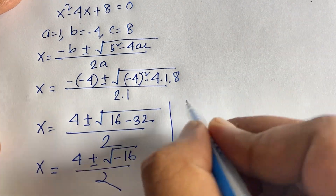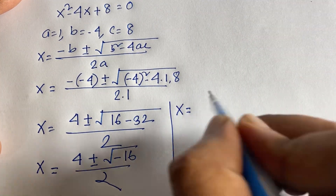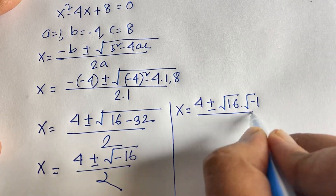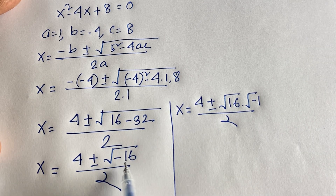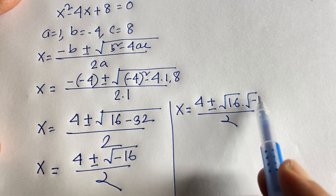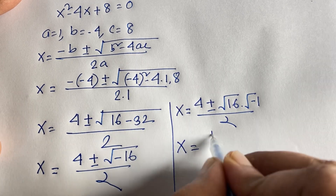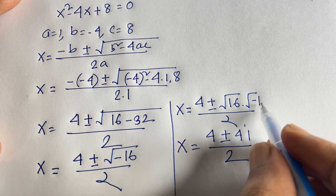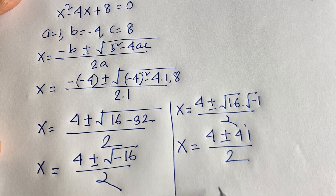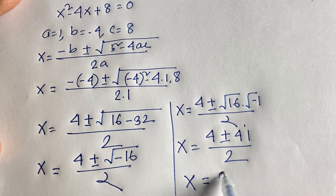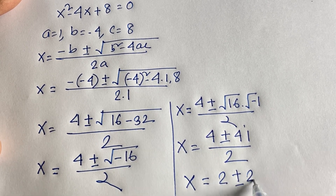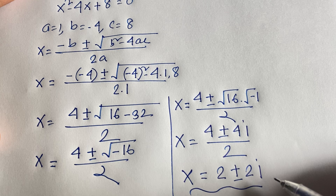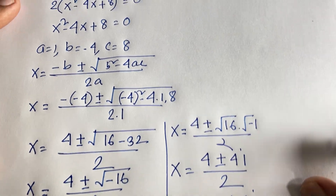We can write square root of minus 16 as square root of 16 times square root of minus 1, which equals 4i, since square root of minus 1 equals i by the complex number rule. So x equals (4 plus or minus 4i) over 2, which gives x equals 2 plus or minus 2i. This is our complex solution.